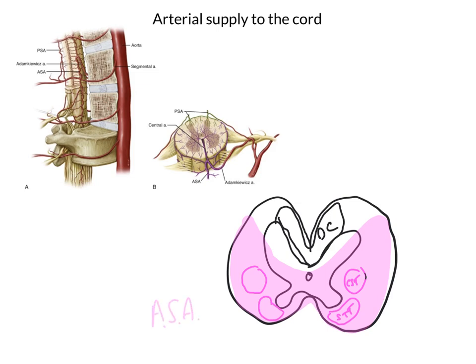You can see that the anterior spinal artery supplies the anterior two-thirds of the cord, and that includes the grey matter of the ventral horns, the corticospinal tracts, and the spinothalamic tracts. So the anterior spinal artery is a really important vessel supplying most of the important pathways in the cord. The posterior spinal artery supplies the posterior one-third of the spinal cord, which therefore supplies the region of the dorsal column pathways and most of the dorsal horns.